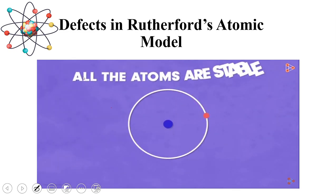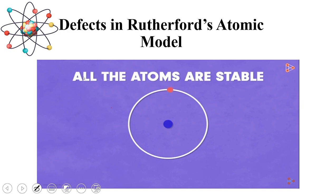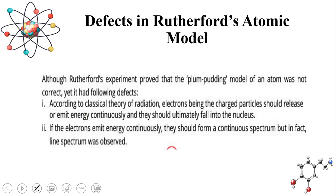But this is not the case. All atoms are stable — it is not the case that they collapse. So according to Rutherford's Atomic Model, any charged object when it moves continues to release its energy, which means the atom should be unstable, but in reality the atom is not unstable.